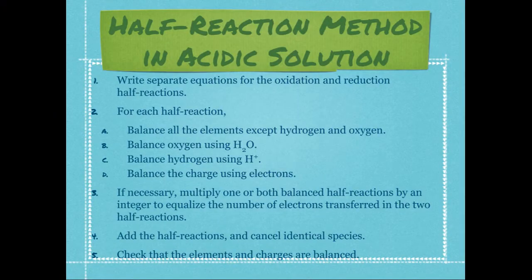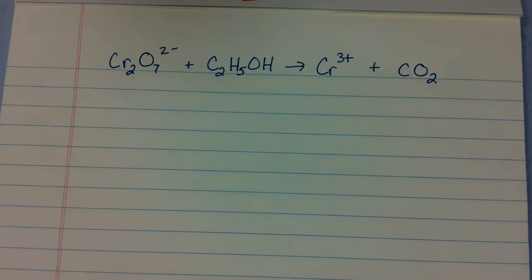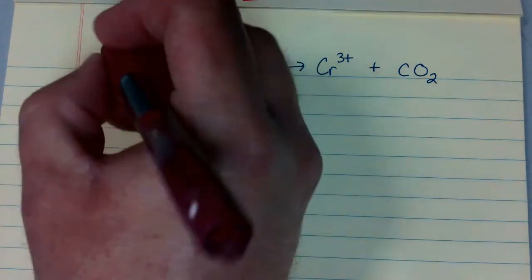These are the steps we're going to follow as we use the half-reaction method in acidic solution to balance a redox reaction. Let's go ahead and assign oxidation numbers to each atom in this reaction so that we can identify the oxidation and the reduction.